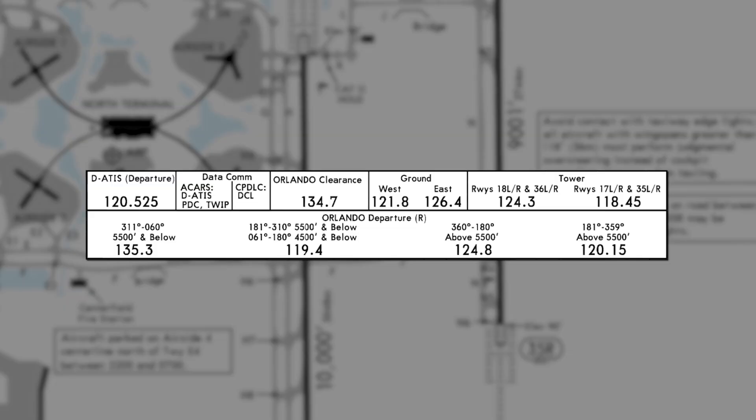Once we get the weather in hand, we need to get clearance to get out of the airport — to actually be cleared out of the Class Bravo airspace. Every airport is different in the United States as well as around the world in terms of different classes of airspace, so please check your local regulations to see what applies to you.